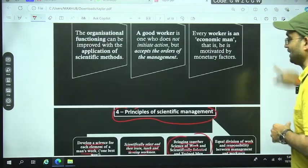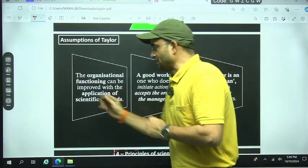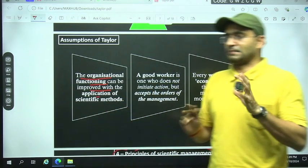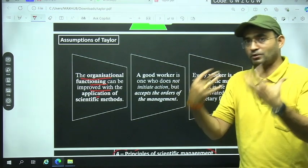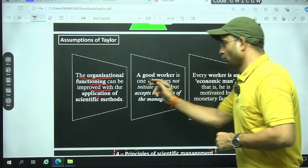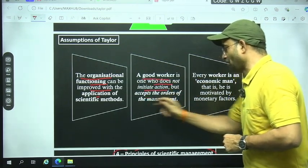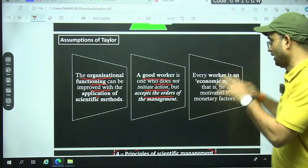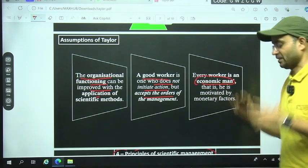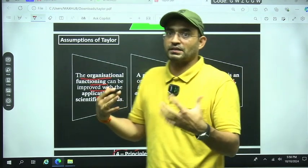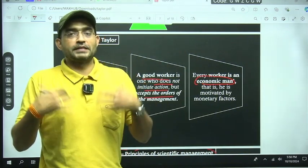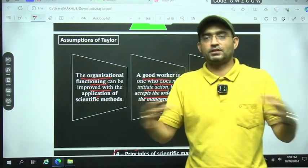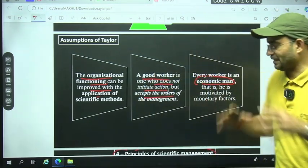Along with this he says that in Taylor's scientific management, this becomes special that organizational functions can be improved with application of scientific management. If we implement all four, our organization's performance will improve. Again, good worker is one who does not initiate action but accepts the order of higher authority. Meaning whatever the worker is, his job is only to execute things. While every worker is an economic man, meaning whoever is joining the organization, his objective is to earn money from it, he has no emotion, the biggest emotion is money. So Taylor presented all these things and gave a full-fledged systematic scientific theory.